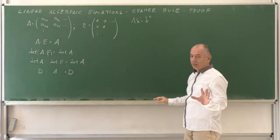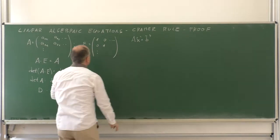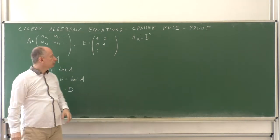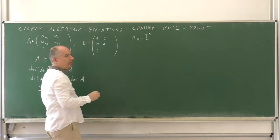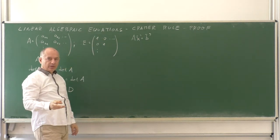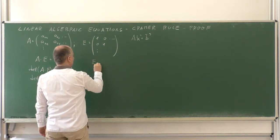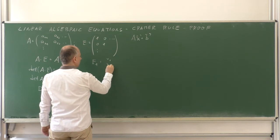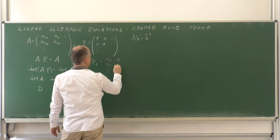But now let's change the matrix E by changing one column. Say, instead of the first column, we write the unknowns X1, X2, and so on. So, imagine the matrix E1 being X1, X2, and so on. And the remaining columns are the same.